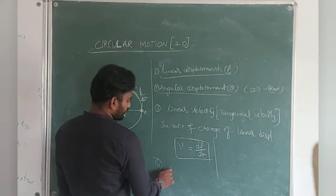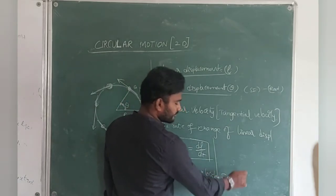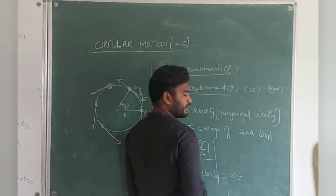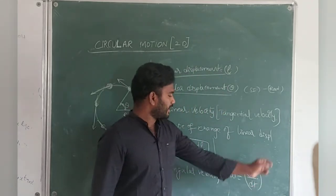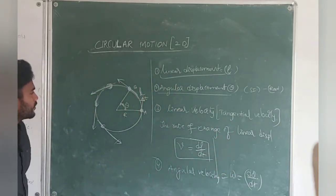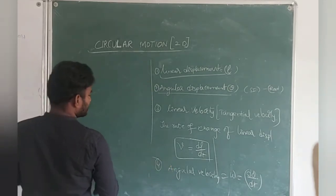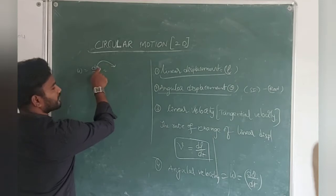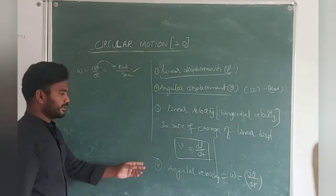The fourth topic is angular velocity, denoted by omega. Angular velocity is the rate of change of angular displacement. The formula is omega = dθ/dt. Since the unit of theta is radian and time is second, the SI unit of angular velocity is radian per second.